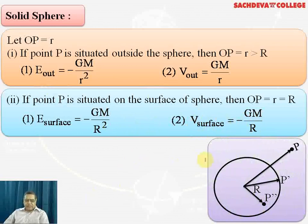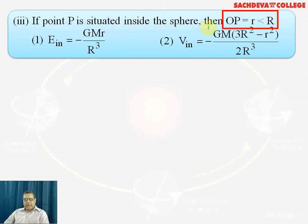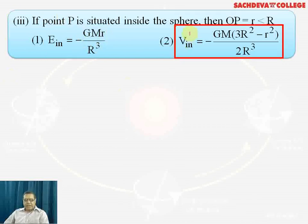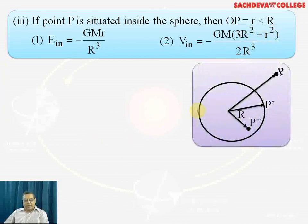Referring again to the same figure: if point P is inside the solid sphere, small r is less than capital R. In that case, the gravitational field intensity inside is -GM·r/R³. The gravitational potential inside is given by -GM × (3R² - r²) / (2R³).